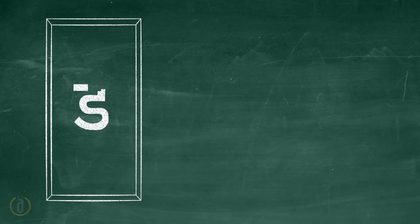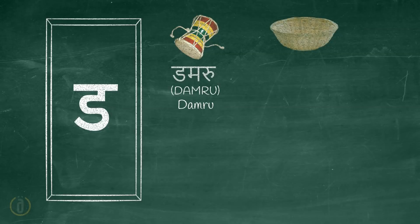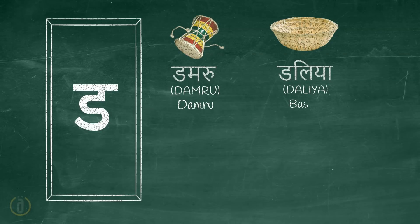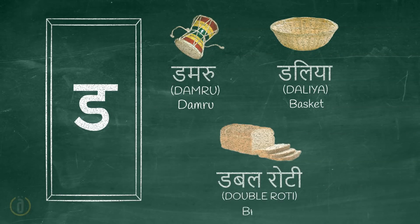Now let us learn some words starting with the letter Da. Damroo. Dahlia — basket. Double roti — bread.